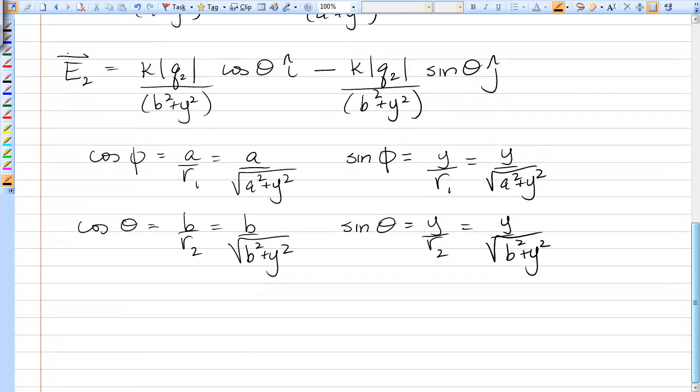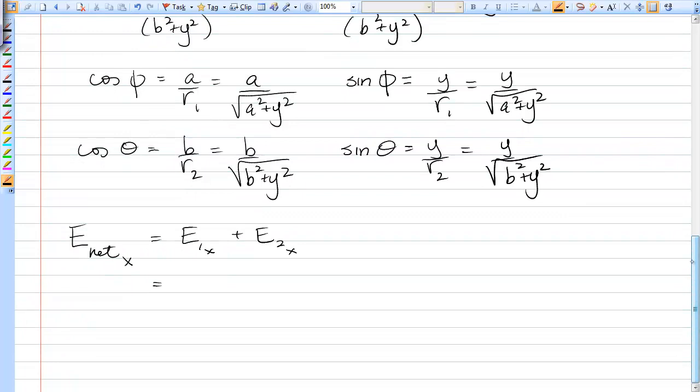All right, let's sub that into our components, and we'll go right away to the net X component. So it's the X component from 1 plus the X component from 2. Okay, so the X component from 1 is K magnitude Q1, and then I'm going to substitute cosine phi in there, and on the bottom, now I'm going to have A squared plus Y squared to the 3 halves, because 1 plus 1 half is 3 halves. And then for the second electric field, I've got Q2, B, and now it's B squared plus Y squared to the 3 halves. Okay, that's the X component.